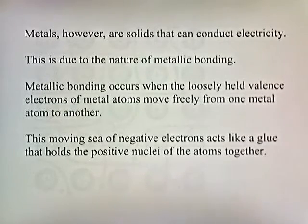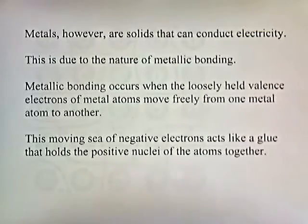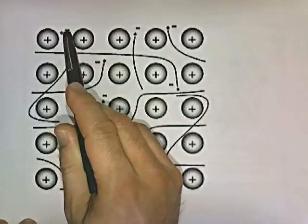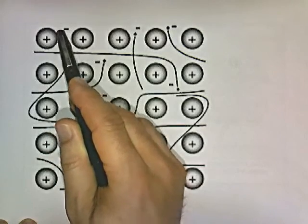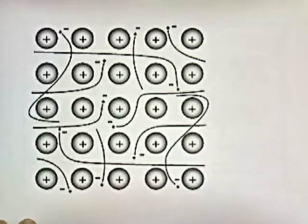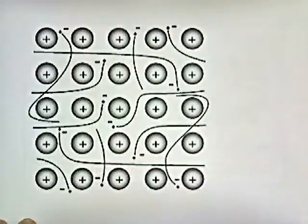Metals, however, are solids that can conduct electricity, and this is due to the nature of metallic bonding. Metallic bonding occurs when loosely held valence electrons of metal atoms move freely from one metal atom to another. On a metal, the valence electrons are held very loosely — they can leave the atom and move from one atom to another. This moving sea of negative electrons acts like a glue that holds the positive nuclei of the atoms together.